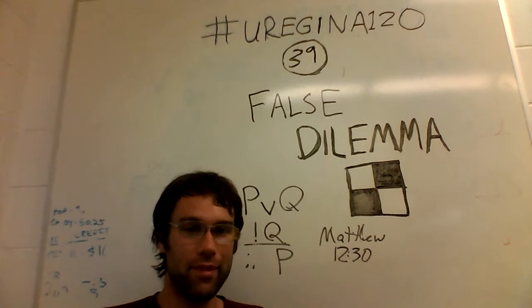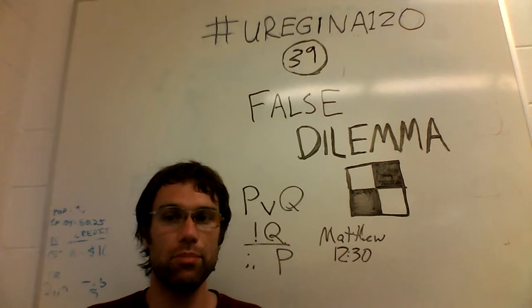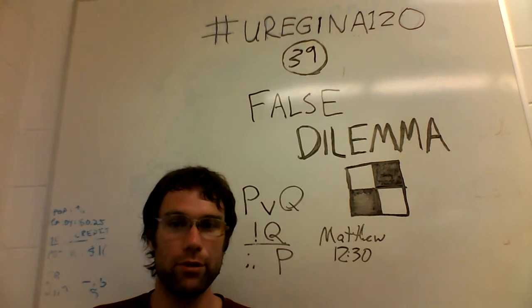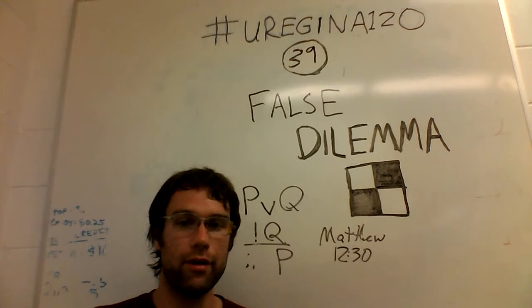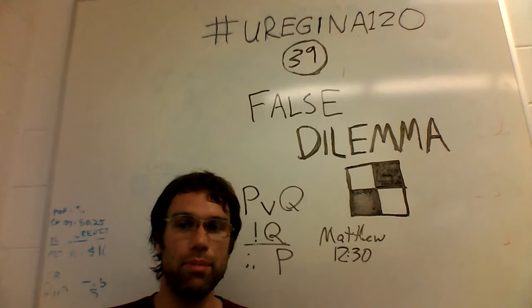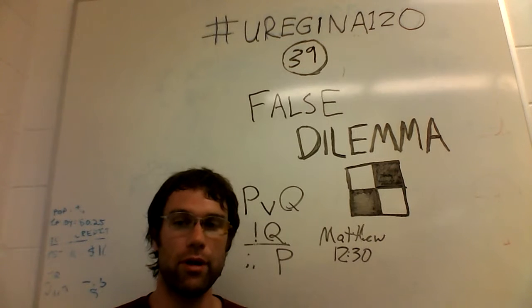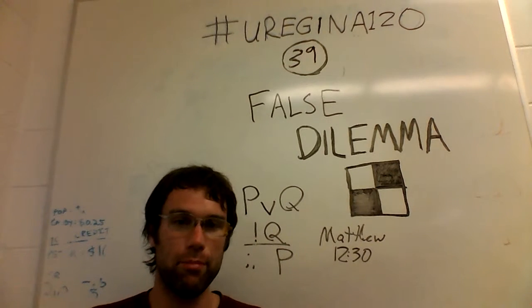So when you split things into black and white, you end up with these really unfortunate categories that include a lot of unfortunate outcomes. And it's usually better that if you can get more outcomes, or more categories to choose from, you might be able to choose a middle path that's better than the two extremes.